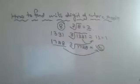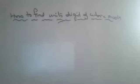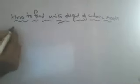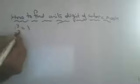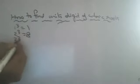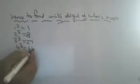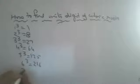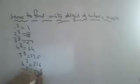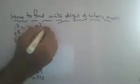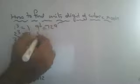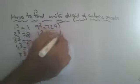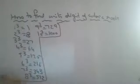To answer these questions, you must remember the cubes of the first ten numbers: 1³=1, 2³=8, 3³=27, 4³=64, 5³=125, 6³=216, 7³=343, 8³=512, 9³=729, 10³=1000. If you remember this table, you can answer all such questions.